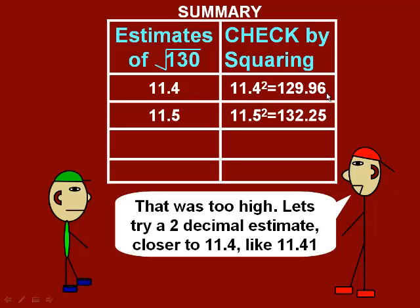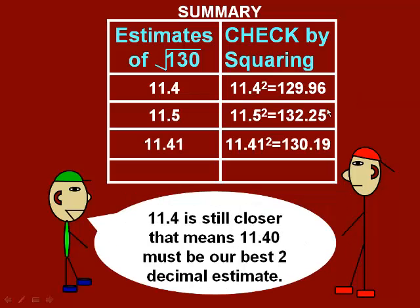In fact, 130 is a lot closer to 11.4 squared. So like Mayhem suggests, we're going to choose a number very close to 11.4. In this case, 11.41. That gives us a number slightly bigger than 130. So now for our two decimal estimate, we've got 11.40 or 11.41. The closest number to 130 is still 11.4. So that's our best two decimal estimate.